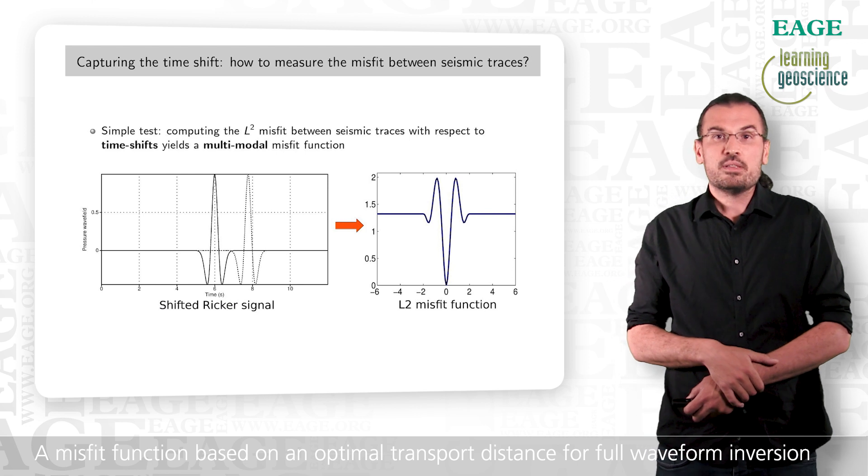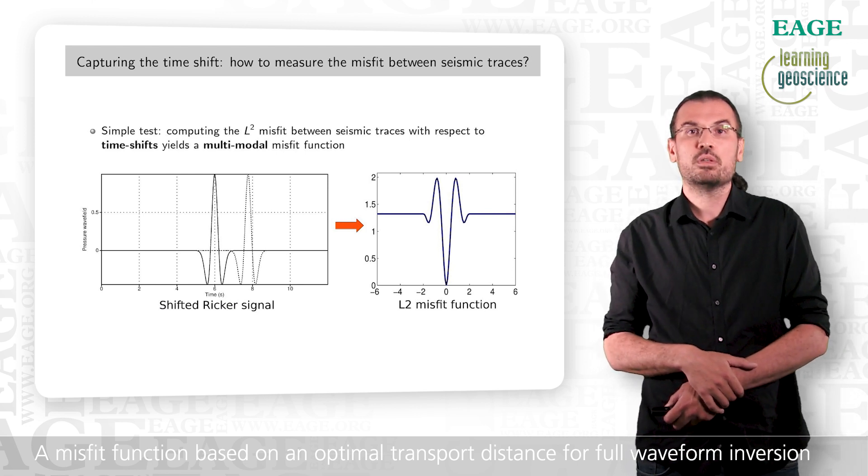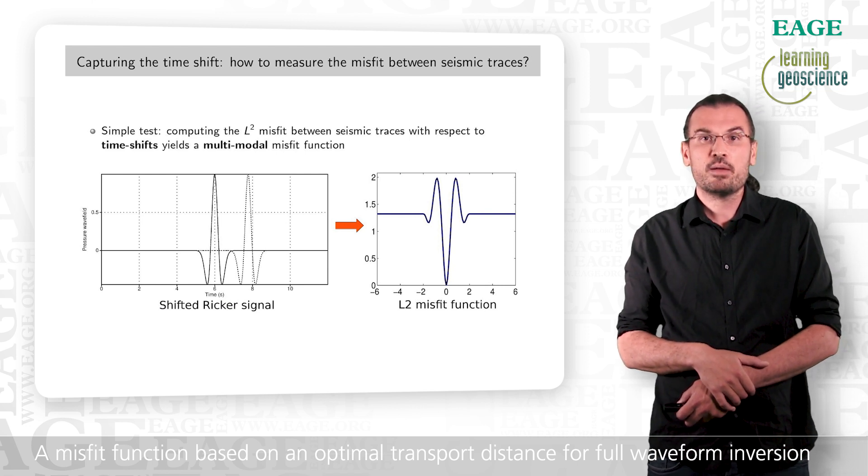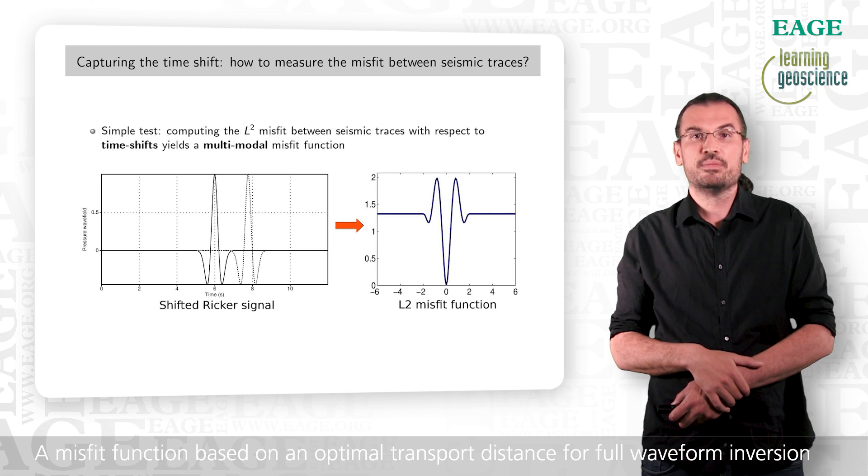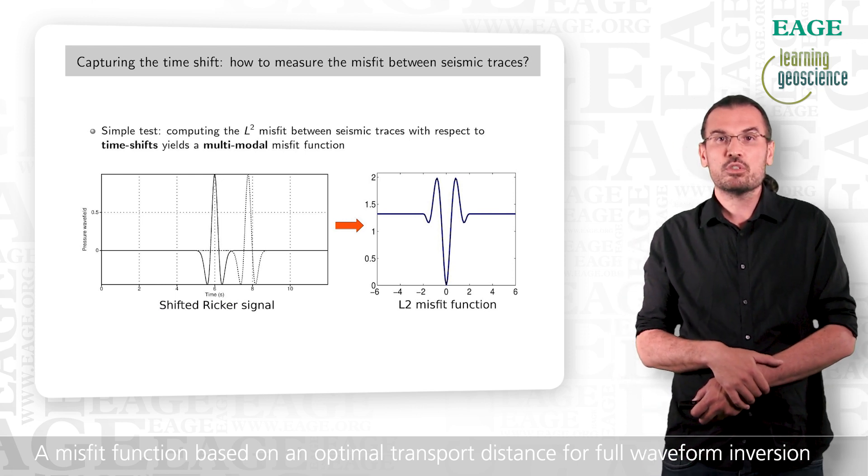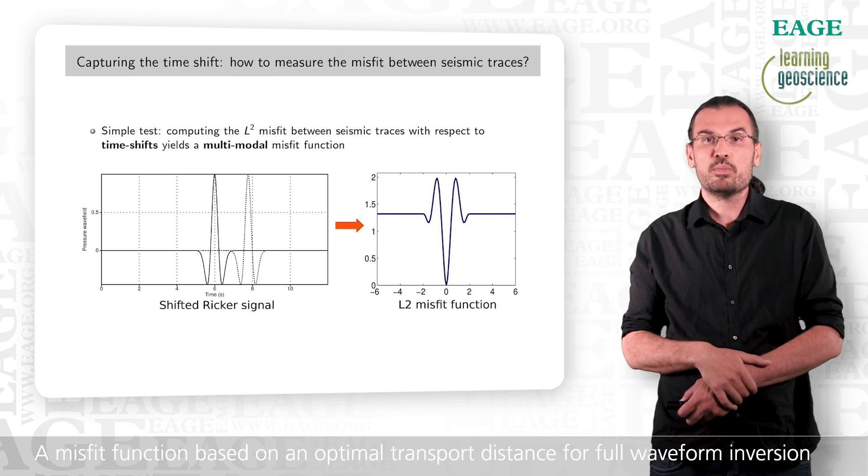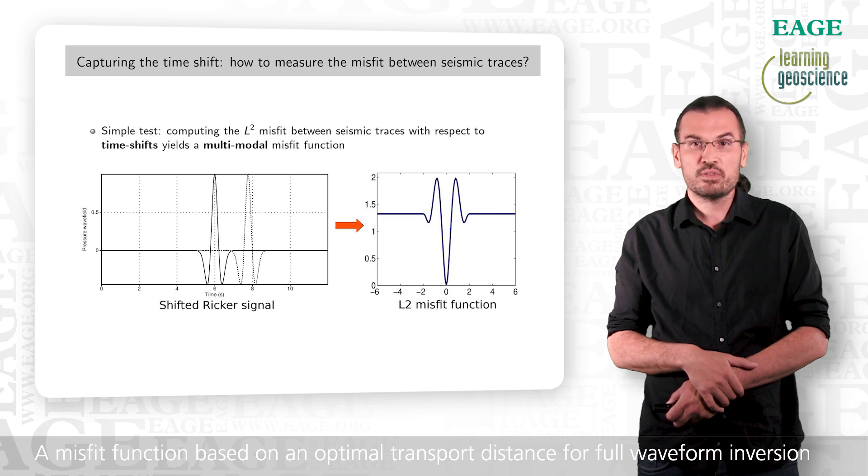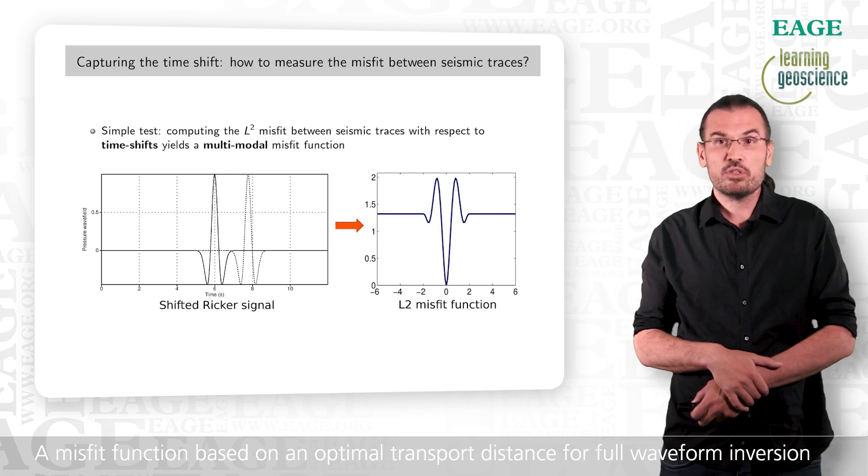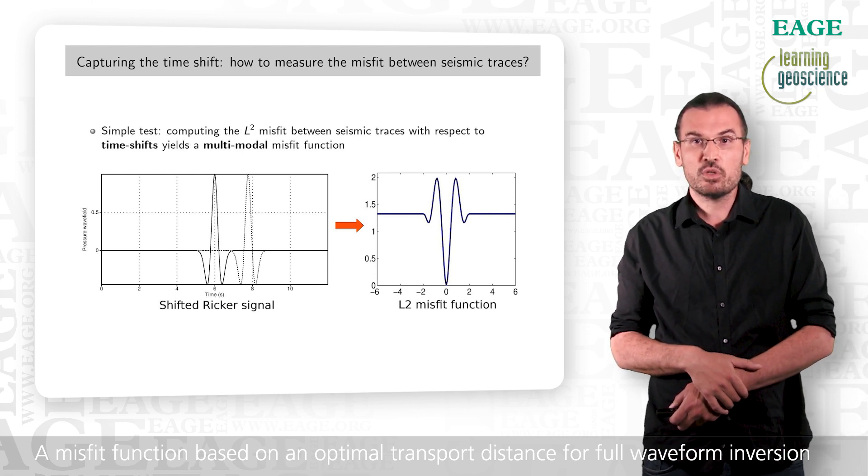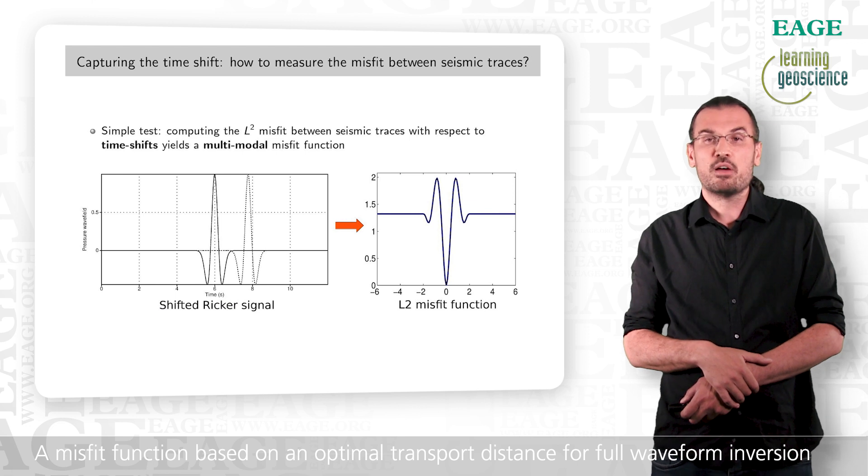To illustrate this, we consider in this example two recur signals in solid and dotted lines. The dotted line recur is shifted in time from the original solid line recur. And we plot the least square misfit between these two recur depending on the time shift. We see that the corresponding misfit function has a global minimum at zero time shift, and also two secondary minima close from minus two and two second time shift. This is a very simple illustration of cycle skipping. The misfit function has local minima in which we will converge if the initial prediction is too far from the observation.